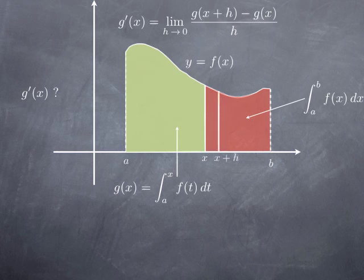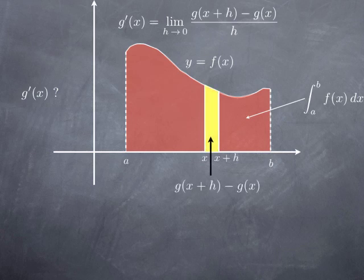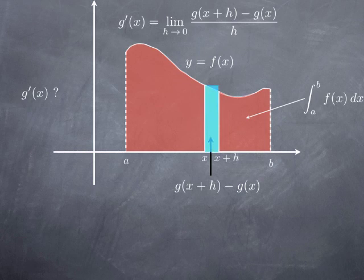Here is x + h for some small positive h, and so g(x + h) is the area under the graph of the function on the interval from a to x + h. On the other hand, g(x + h) minus g(x) is this yellow area — the difference between the two areas. Can we estimate this yellow area? If h is small, then this yellow area should not be too far off the area of a rectangle of width h and height f(x).